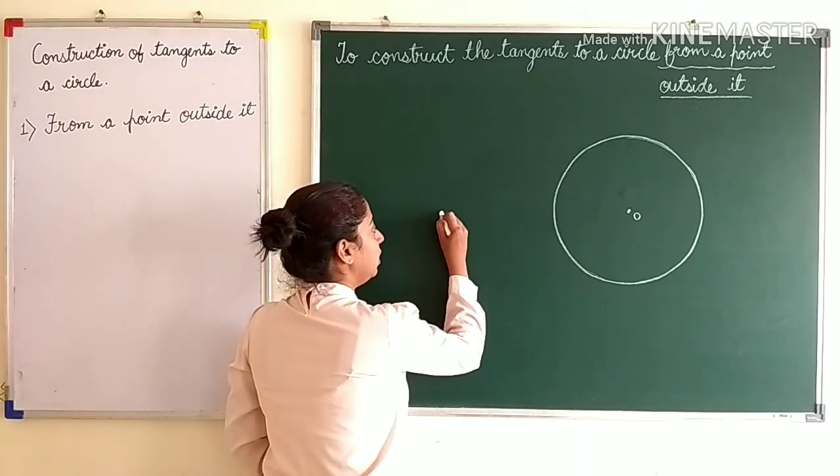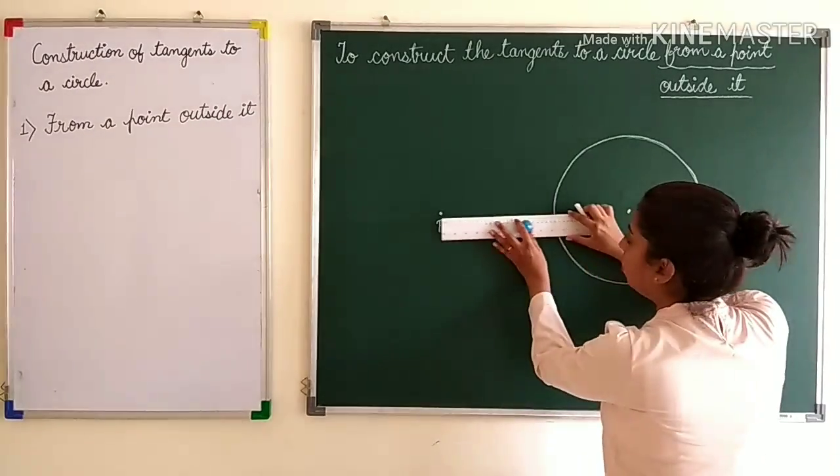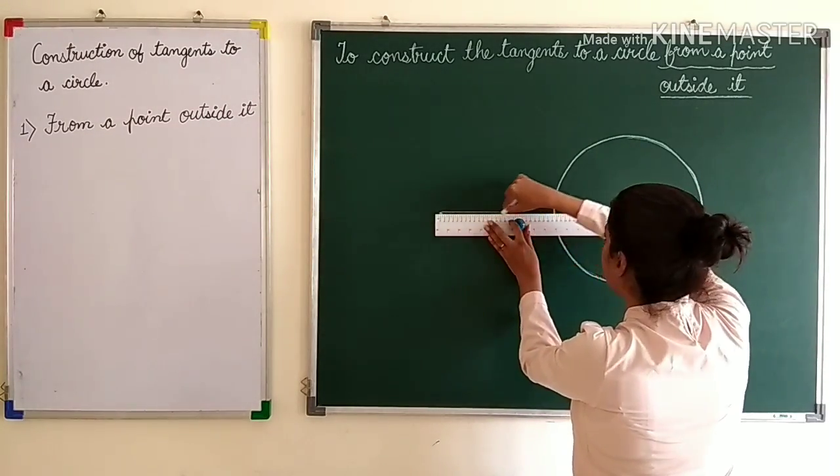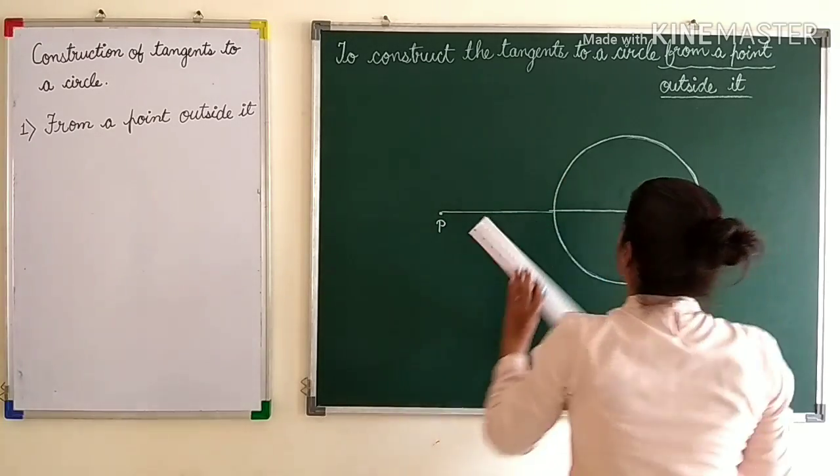So what is the first step? We will join P and O. Our first step is joining P and O through a straight line.